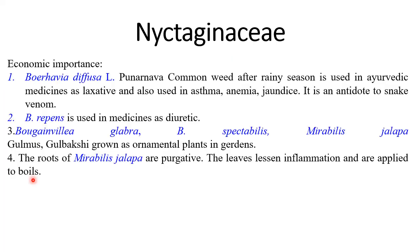Here we will study the economic importance of the family. The first economically important plant is Boerhavia diffusa. Its Marathi name is Punarnava, and it is a very common weed that grows after the rainy season. It flowers in October and November, during which the plants are collected. This plant is used in Ayurvedic medicines — it has laxative properties and is also used in asthma, anemia, and jaundice. It is also used as an antidote to snake venom. Another plant, Boerhavia repens, is again used in Ayurvedic medicines and has diuretic properties.